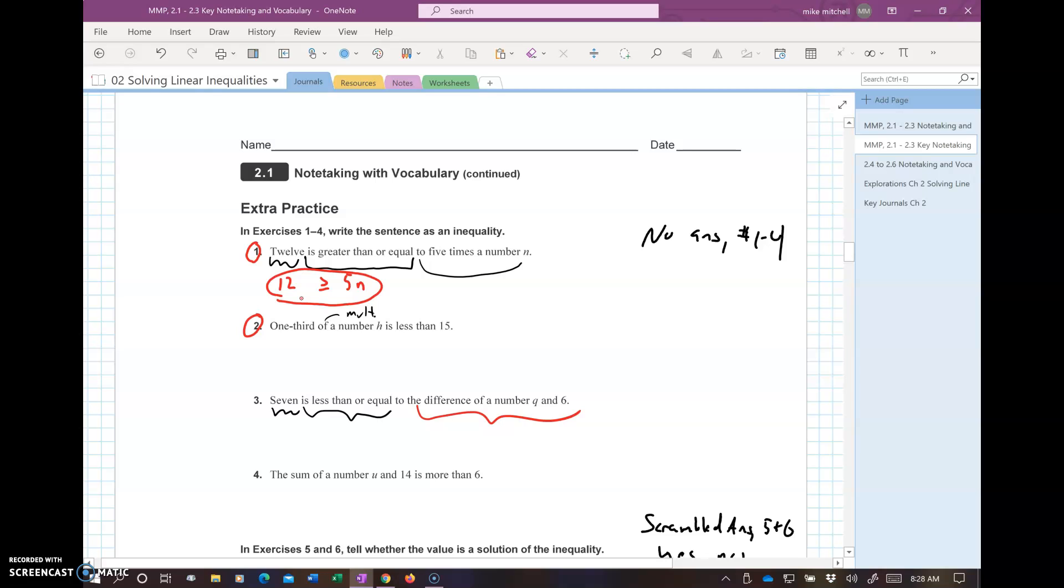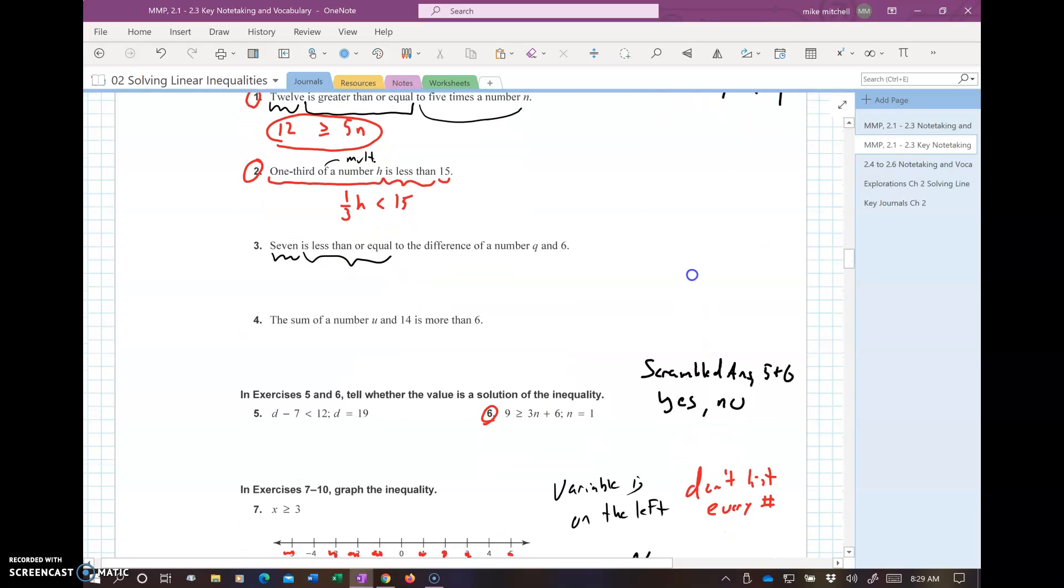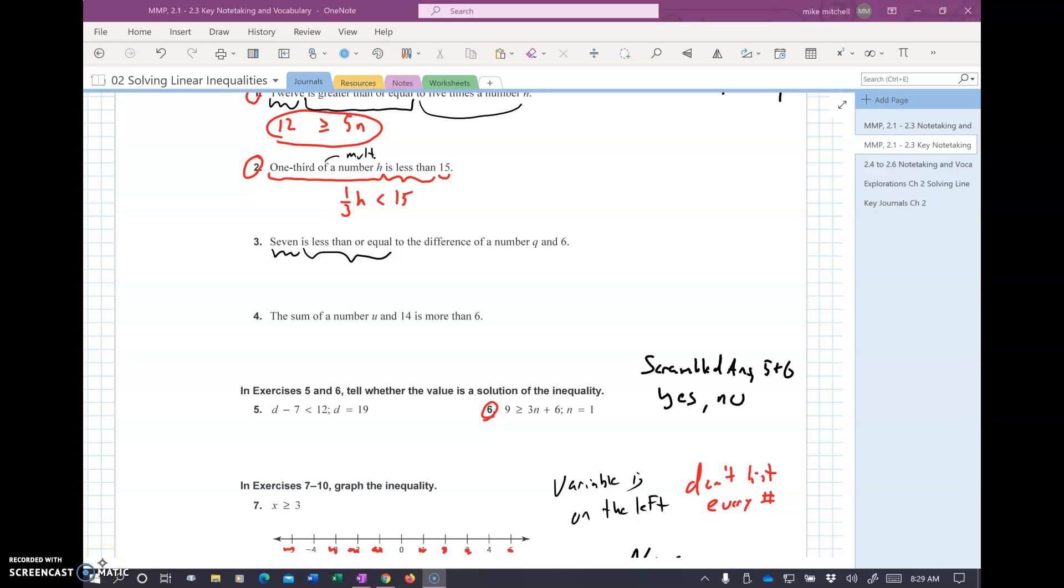Again, it helps to think of this. One third of a number h. That all goes together. Is less than 15. So, one third of is multiplication. That's one third times h is less than. There's no equals. 15. I got my first two picked out there. You can get the third one that was just erased on there. You can get the fourth one. Number five and six, I do have a scrambled answer for.